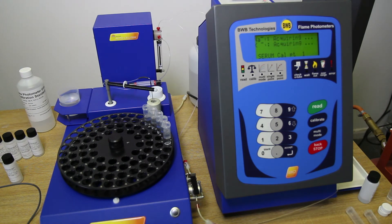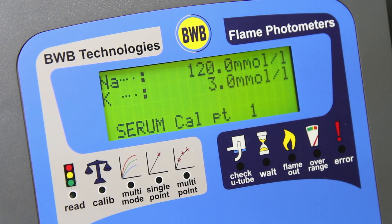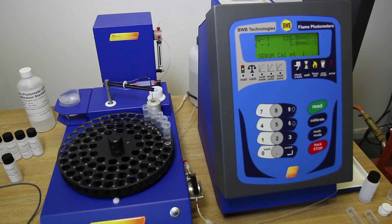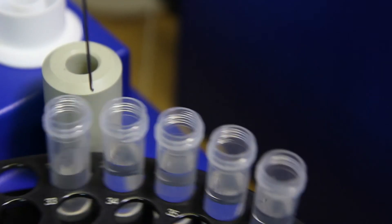The BWB Bio will take a reading once it has acquired a stable signal. Once the reading has been acquired, the AFHS will flush the sample using fluid from the reservoir and automatically position the carousel for the next reading.